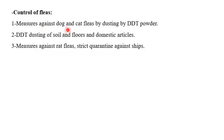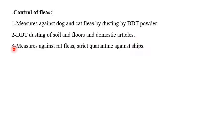Control of fleas: measures against dog and cat fleas include dusting with DDT powder, dusting of soil, floors, and domestic articles. Measures against rat fleas include effective quarantine against ships.